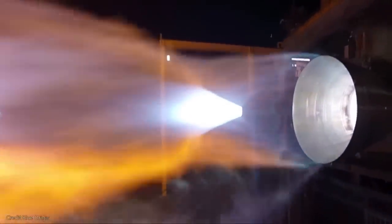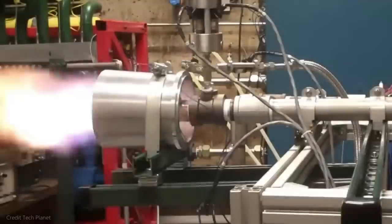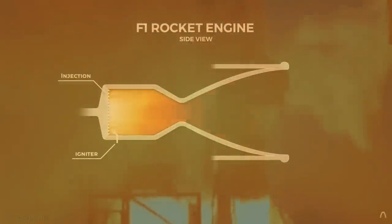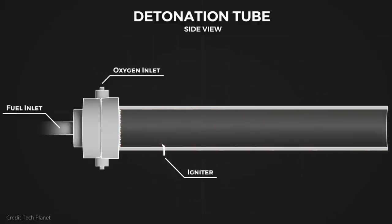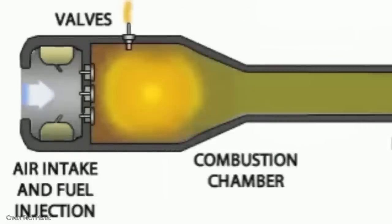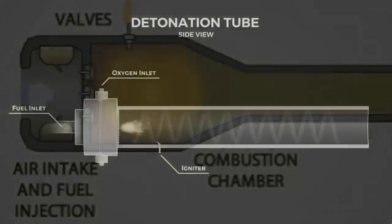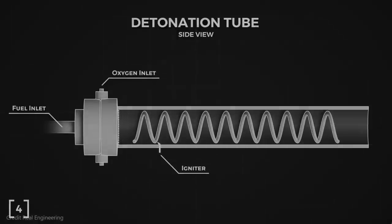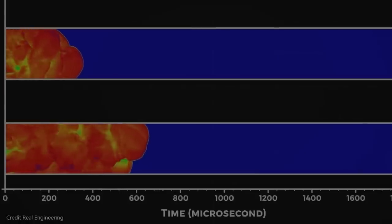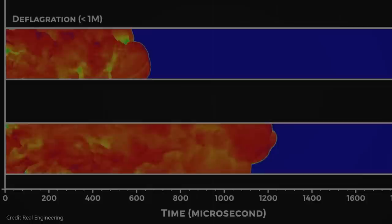A detonation rocket engine is a type of propulsion system that uses the principle of detonation to generate thrust. Unlike traditional rocket engines which use a steady combustion pressure to produce thrust, detonation engines rely on a rapid and violent chemical reaction that occurs when fuel and oxidizer mixtures are detonated. The engine takes in a mixture of fuel and oxidizer which is then compressed to a high pressure using a series of pumps or compressors. This helps to increase the reactivity of the mixture. The compressed mixture is then ignited in a detonation chamber using a spark or other ignition source. The ignition causes a rapid and violent chemical reaction to occur, creating a supersonic shock wave that propagates through the mixture. The shock wave compresses and heats the mixture ahead of it, causing it to undergo further combustion and releasing a large amount of energy in the form of heat and pressure. This supersonic shock wave results in the expansion of the combustion products, creating a thrust that propels the rocket forward.